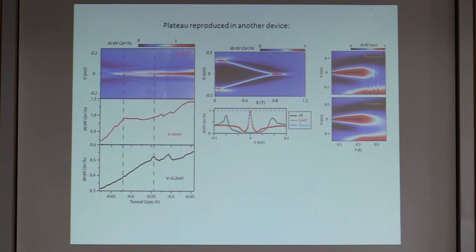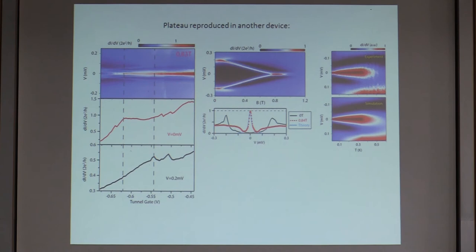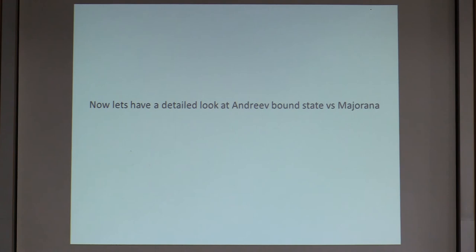Temperature dependence: the black curve is what we measured, and the red curve is the theory. It fits quite well from 70 millikelvin all the way to 600 millikelvin. We took the 20 millikelvin data as the zero-temperature input and performed a Fermi derivative convolution to calculate the result at different temperatures — the agreement is very good. This also suggests our true electron temperature at 20 millikelvin is probably much less than 50 millikelvin.